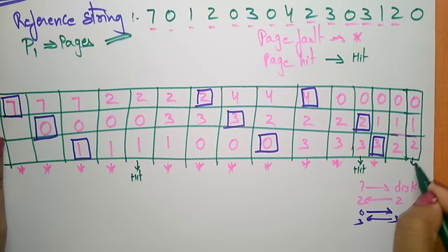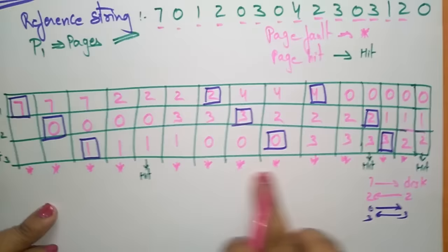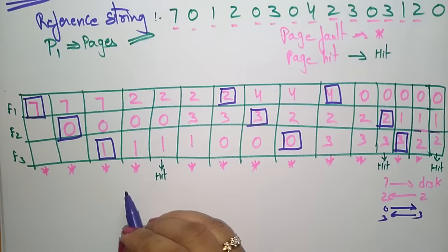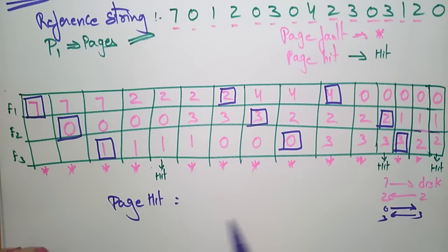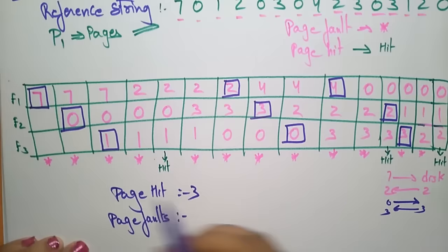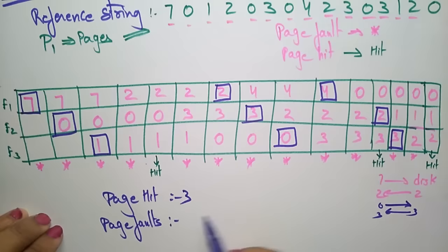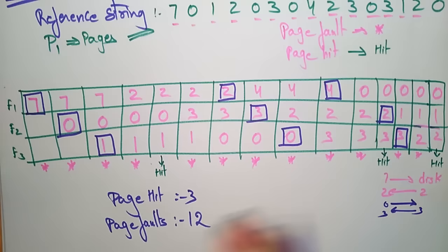The star marks indicate page faults and the others are hits. Counting through the reference string, there are a total of 12 page faults. By observing the page hits and page faults, we can decide whether the FIFO algorithm is suitable for our program.